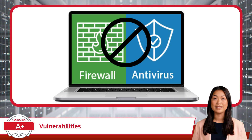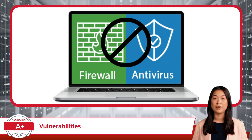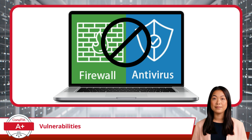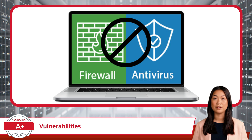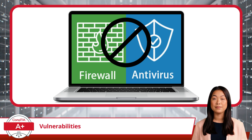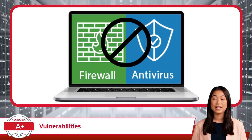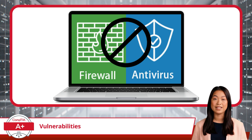Now we can move on to unprotected systems — devices running without essential security measures like antivirus software or a firewall. Think of antivirus as your system's immune system, constantly scanning for malicious software. When detected, the antivirus works to neutralize and remove the threat before it can cause any damage. A firewall acts as the gatekeeper for your network, monitoring incoming and outgoing traffic and deciding what's allowed to pass through based on predefined security rules. Without both antivirus protection and a firewall in place, your system is vulnerable to everything from malware infections to hacking attempts.